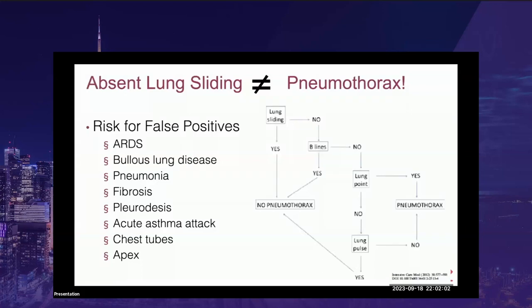There is significant risk for false positives when using lung ultrasound for pneumothorax evaluation. Absent lung sliding can be seen in patients with severe ARDS, bullous lung disease, pneumonia with poor lung aeration, fibrosis, pleurodesis, acute asthma exacerbations with overinflated lungs, chest tubes, or when evaluating the apices in patients on mechanical ventilation with high PEEP, where the apices stay inflated throughout the respiratory cycle.